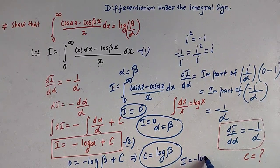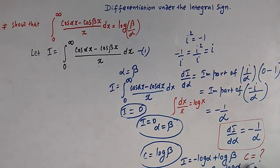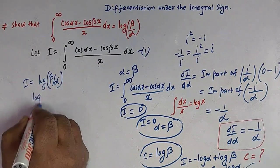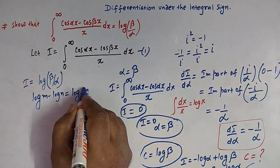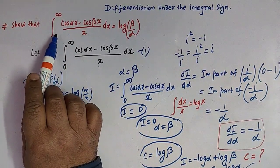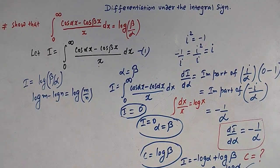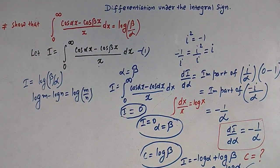Substituting c = log β back into the equation, we have I = -log α + log β = log β - log α. Using the logarithm property log m - log n = log(m/n), we get I = log(β/α). So viewers, the value of this integral is log(β/α). This is how, by using the concept of differentiation under the integral sign, we can prove this integral equals log(β/α).